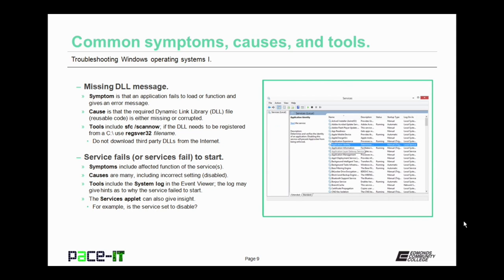Another symptom to discuss is when services fail to start. The symptom is that some function is affected because the service hasn't started. The leading cause is that the required service has been set to disabled. You can check the system log in Event Viewer to get hints as to why the service failed to start, or you can use the Services applet, which can also give you insight on the service's behavior — whether it's set to run automatically or is in the disabled state.